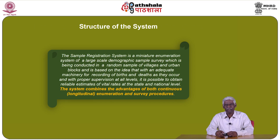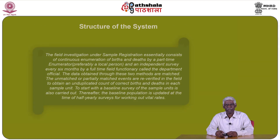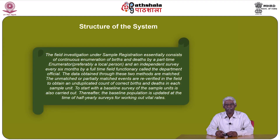The system combines the advantages of both continuous or longitudinal enumeration and survey procedures. The field investigation under the Sample Registration System essentially consists of continuous enumeration of births and deaths by a part-time enumerator, preferably a local person, and an independent survey every six months by a full-time field functionary called the departmental official. The data obtained through these two methods are matched, and unmatched or partially matched events are reverified in the field to obtain an unduplicated count of correct births and deaths in each sample unit.